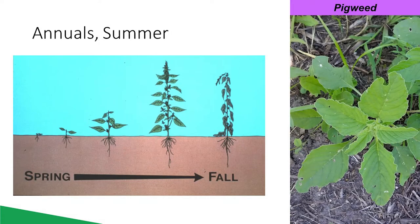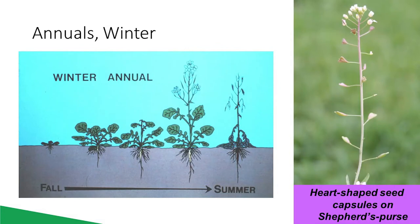Let's talk about life cycles quickly before we discuss how to identify some of our more common weed species. There are three major types. Annuals complete their life cycle within one year and reproduce by seed only. There are two types: summer annuals germinate in the spring, flower in the summer, and set seed in late summer or fall. Winter annuals germinate in the fall, then flower and set seed in spring or early summer.